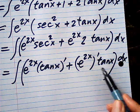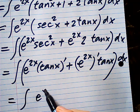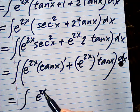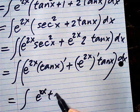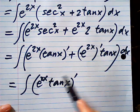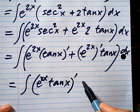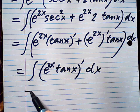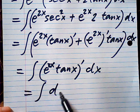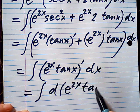Then this is obviously a product rule. See, that is e to the 2x times tangent derivative, the product rule. This is the derivative of this one plus this is the derivative of that one. So this simply means d of e to the 2x tangent x.